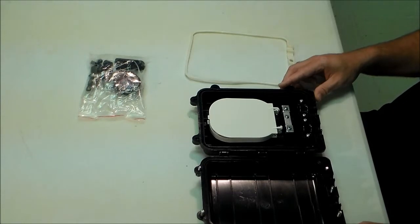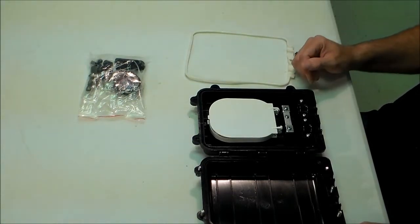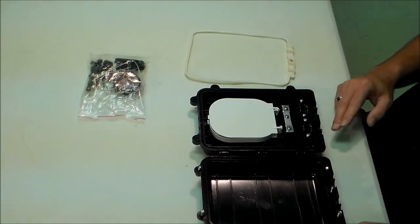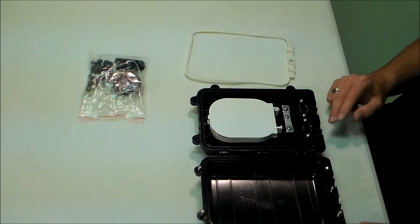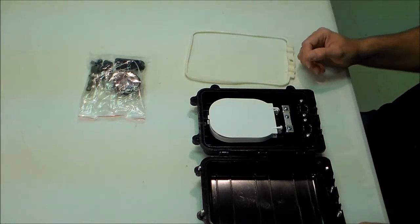We open it up on the swing hinge, and inside is a splice tray. It's made for 12 fiber. It has four ports here, so you can do two in, two out, or one in, one out, whatever configuration you need.